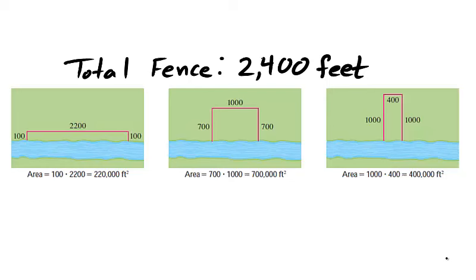We can attempt to answer this question by a guess and check method. You can build a 100 by 2200 foot rectangle and enclose an area of 22,000 square feet. Or you can build a 700 by 1000 foot rectangle and enclose an area of 700,000 feet. Alternatively, you can do a 1000 by 400 foot rectangle and enclose an area of 400,000 square feet. The guess and check method is inefficient and most likely will not lead you to a correct answer.